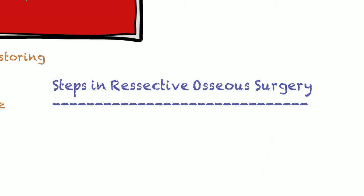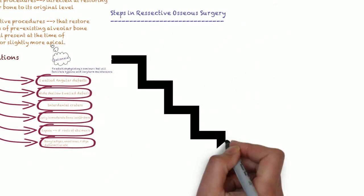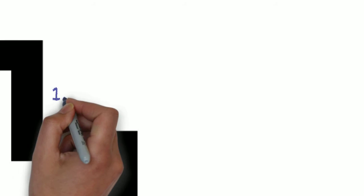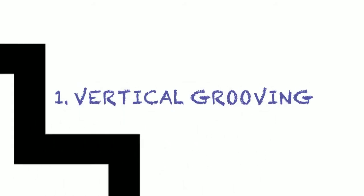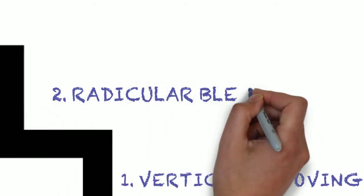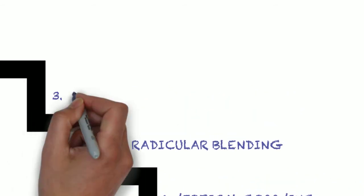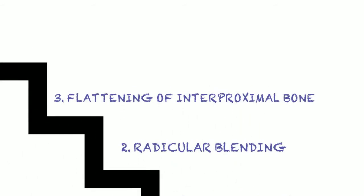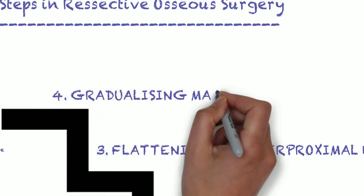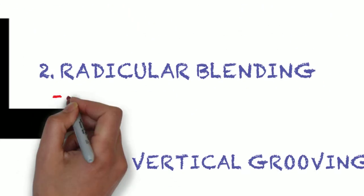The steps involved in resective osseous surgery are categorized into four: first, vertical grooving; second, radicular blending; third, interproximal bone flattening; and finally, gradualizing of the marginal bone.